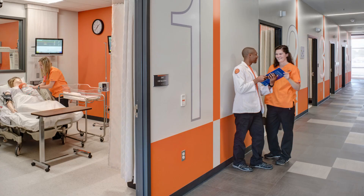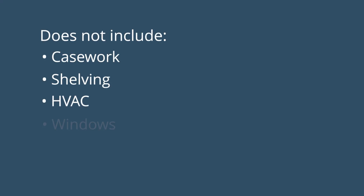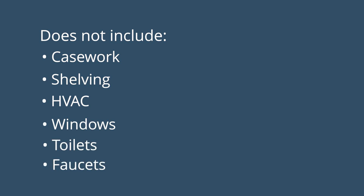FF&E does not include built-in items like casework, shelving, or other immovable building parts like HVAC, windows, toilets, and faucets. These items would be part of the general construction contract.